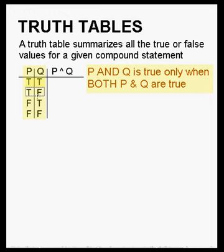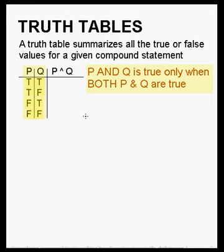When P is false and Q is true, and when P is false and Q is false. Now if we had a third statement like P, Q, and R, we would actually have 8 different possibilities because you would have another true and false for each of these. But we are just going to stick with two different statements here, P and Q.